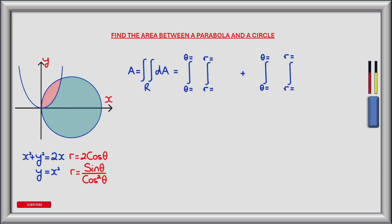We are now in a position to start defining the limits of integration as r rotates about theta, which will form the outer integrals. The area of our region of intersection can be defined as the double integral over the region R where we sum infinitesimally small pieces of area dA. The region was represented by 2 sectors, each being a double integral. In the first sector, theta started at 0 and continued to pi by 4 radians, forming the limits of the outer integral of our first double integral. The second sector began where theta equals pi by 4 radians and continued to theta equals pi by 2 radians, forming the limits of the outer integral of our second double integral.